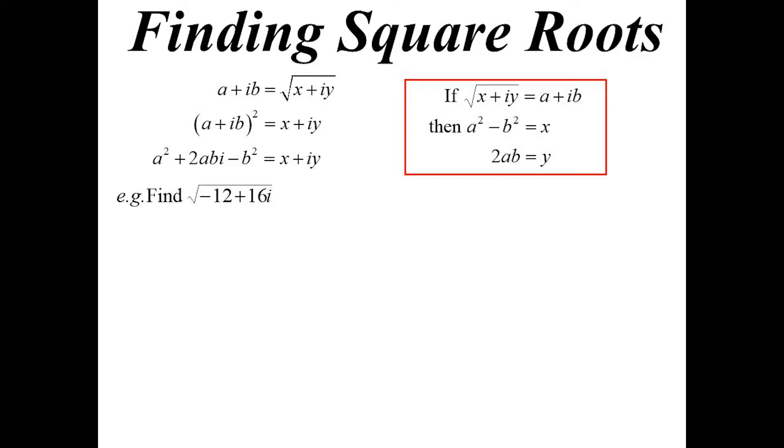So I don't actually have to go and expand out each time. I mean, that pattern is going to happen every time. So I can just jump to it. So if I want to find the square root of negative 12 plus 16i, I'd say, well, OK, I know that the difference of two squares will be negative 12, the real part.